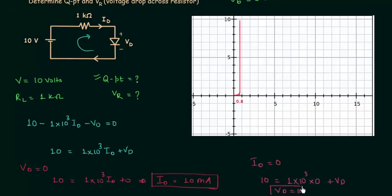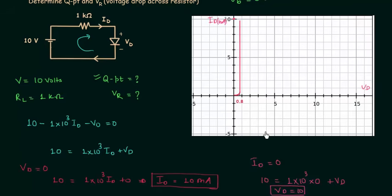Now we have two points to draw the load line. In this plot, the x-axis is for Vd (voltage across the diode) and the y-axis is for Id (current through the diode). When Vd is 0, Id is 10 milliamps, and when Id is 0, Vd is 10V. We can easily plot the load line using these two points.